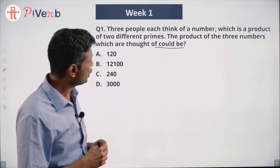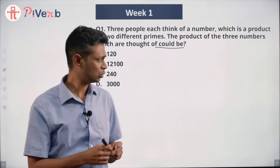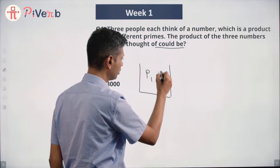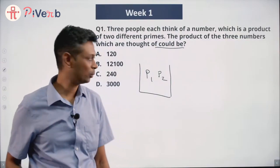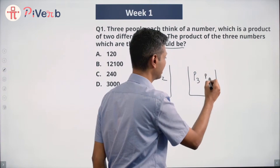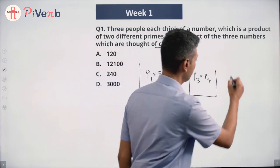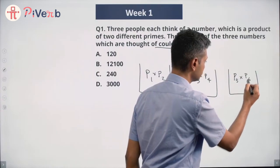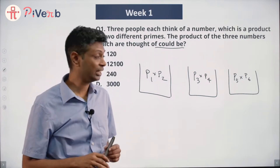Let's say the first person thinks of p1 × p2, the second person thinks of p3 × p4, and the third person thinks of p5 × p6, where each of these is one number — a product of two primes. So the first person thinks of p1 × p2, the second p3 × p4, and the third p5 × p6.